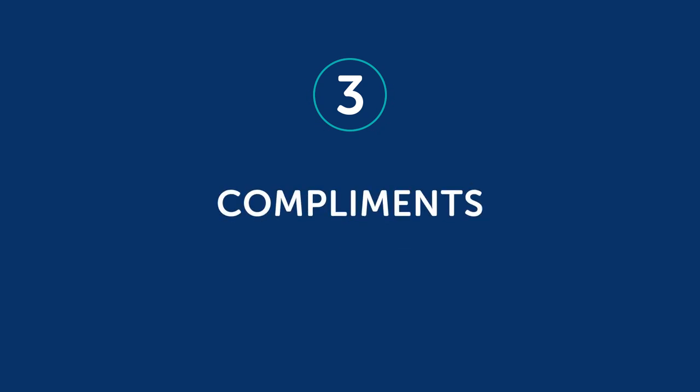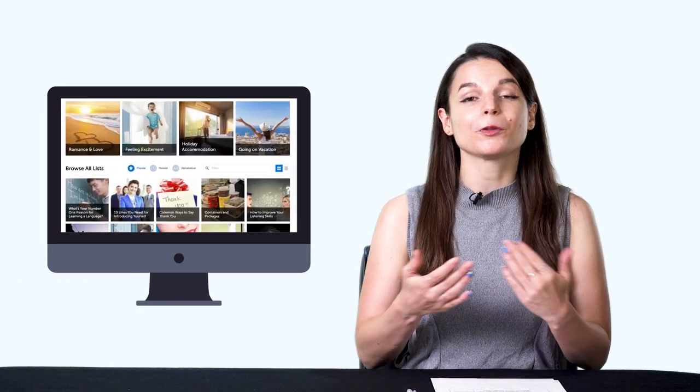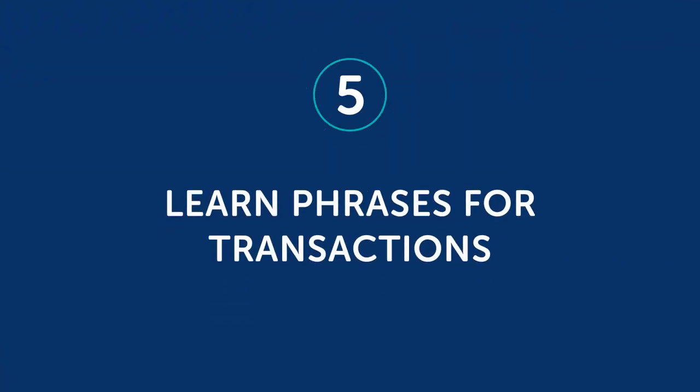Three: compliments. Compliments are a great way to start a conversation. You can compliment something about their city, their country, or something about their culture. Four: ask for help. For example, you can ask for directions, about the price of something, and let the conversation go from there. These are very basic phrases that you learn in our Survival Phrases lessons. Five: learn phrases for transactions, like getting a room at a hotel or telling the taxi driver where to go. These are very easy ways to start a dialogue and you can easily move into other topics — and again, you learn all of these with our Survival Phrases lessons.